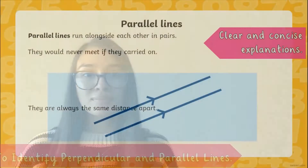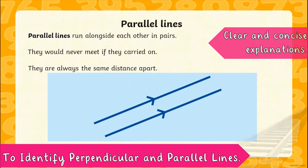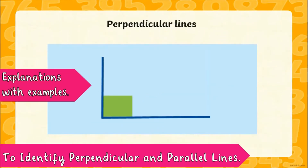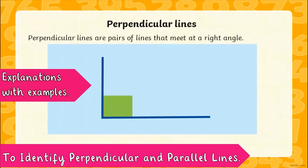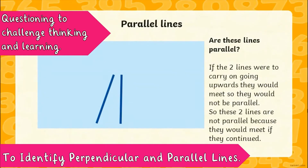Parallel lines are two lines that are always the same distance apart and they never meet, just like railway tracks. Perpendicular lines are two lines that meet at a right angle — so 90 degrees — like a corner of a room or the edge of a book.